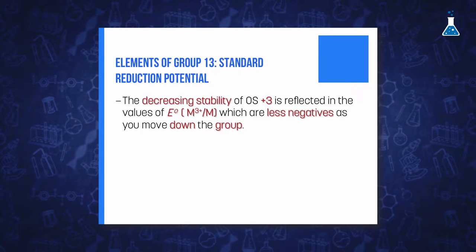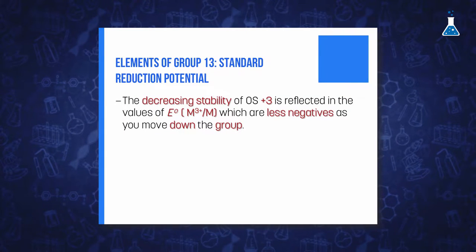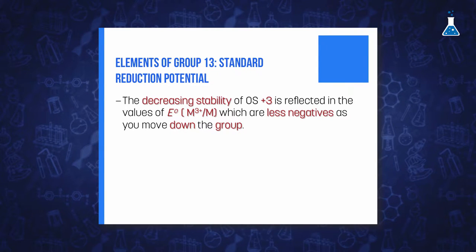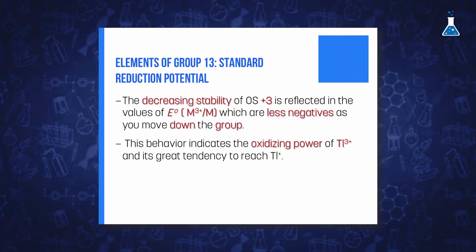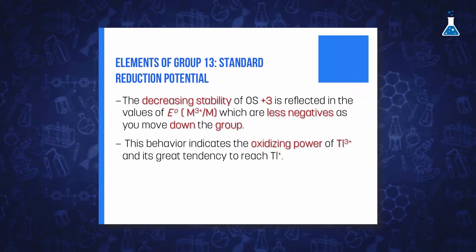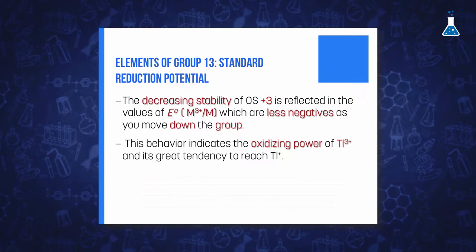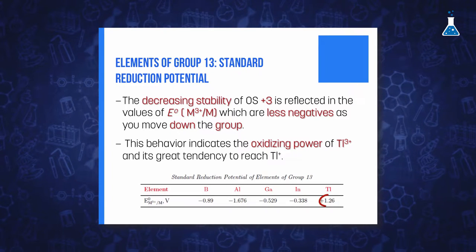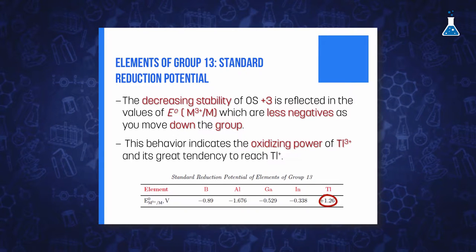The decreasing stability of oxidation state 3+ for the heavier elements of the group is reflected in the values of the reduction potential for the 3+ metal ion to metal. The reduction potential, contrary to what we have observed in previous groups, is less negative as we move down in the group. And even for thallium, we have a positive value of +1.26 volts, which clearly indicates the oxidizing power of Tl³⁺ and its tendency to reach the more stable oxidation state of 1+.